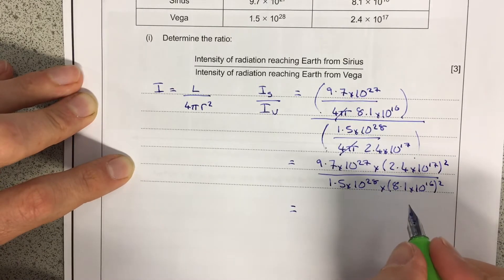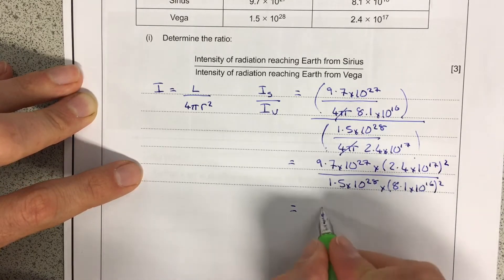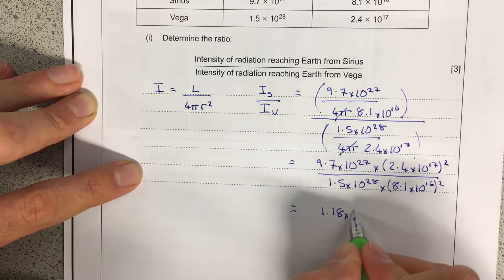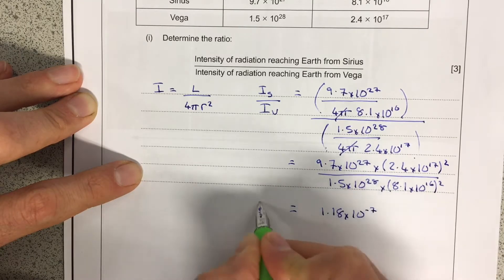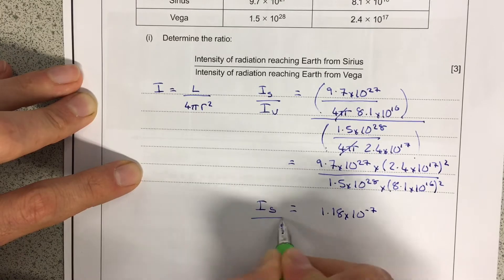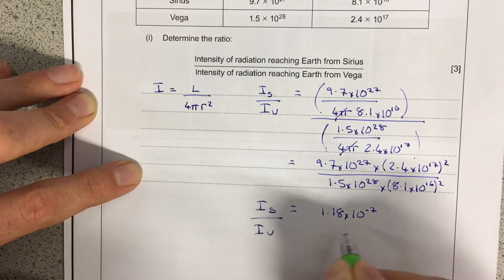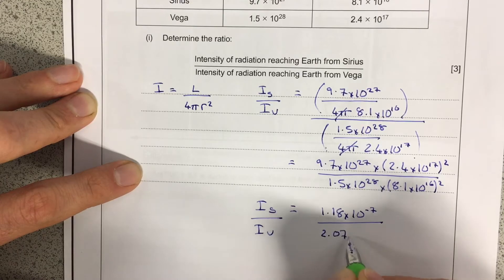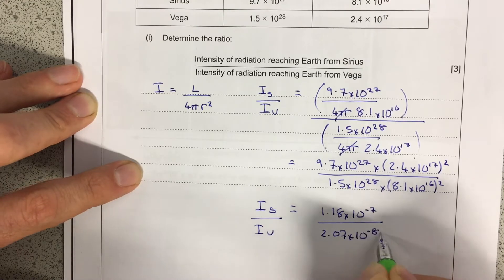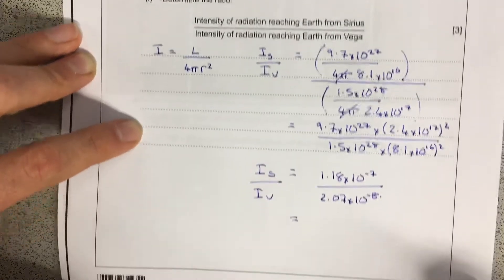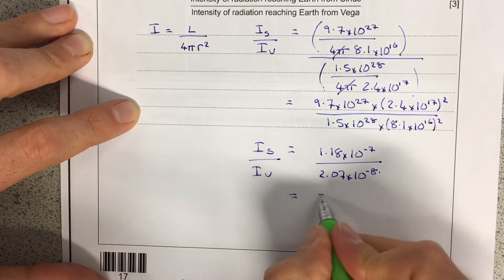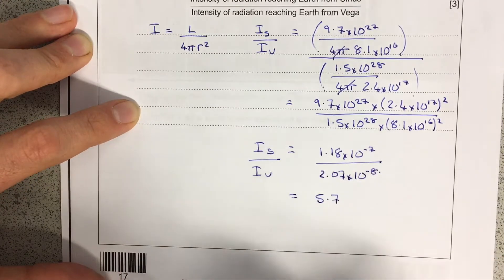That all goes into your calculator. And it should give you 1.18 times 10 to the minus 7 for the intensity of Sirius. And the intensity of Vega is 2.07 times 10 to the minus 8. So when you actually complete that calculation, you end up with 5.7. Okay, and that's a ratio, so there's going to be no unit on there at all.